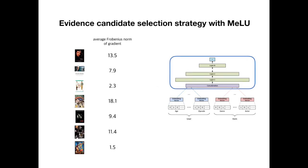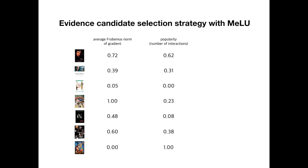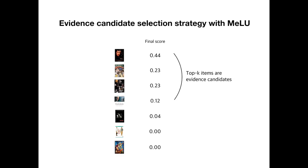We calculate the average norm of all items. However, using only this score to select evidence candidates is not good because users cannot properly evaluate unfamiliar items. To distinguish a user's preferences accurately, we also consider the awareness of items. We assign the number of interactions of each item as a popularity score, then normalize the scores to range from 0 to 1. We multiply them and assign the value as the final score of each item. With this score, we sort items in descending order and select the top-K items as evidence candidates.